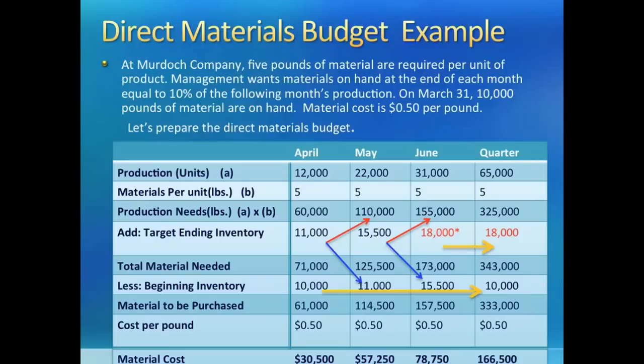Notice that ending inventory in June is also the ending inventory for the quarter, as the yellow arrow shows. The other yellow arrow shows where the beginning inventory for the quarter is coming from. The whole procedure is very similar to the production budget and can be solved using our equation. Blue arrows show that the ending inventory of the previous month is the beginning inventory for the next month, but for April we are given the ending March inventory of 10,000 pounds.